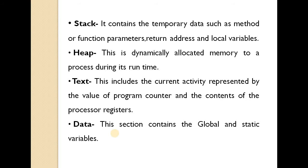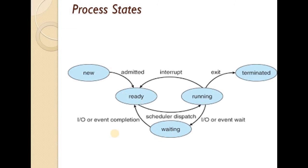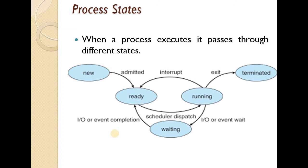So I hope you have understood what is a process. Next, we'll move on to the very important part, that is process states. When a process executes, it passes through different states — from its creation to completion. The state of a process is defined in part by the current activity of that process. As you can see in the diagram, a process can move from one state to another state.